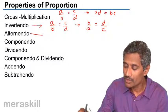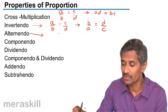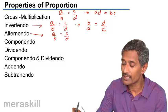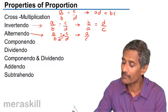Then you have alternando. From the name, alternando means you are alternating some terms. Now, if A by B is equal to C by D, you can alternate this. It is the same as telling A by C would be equal to B by D.